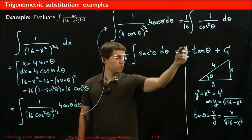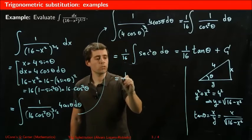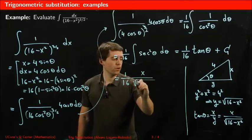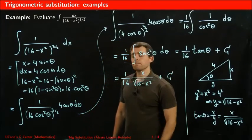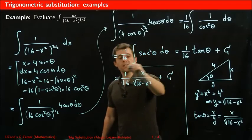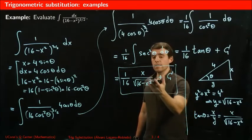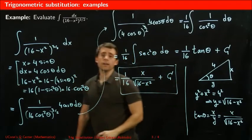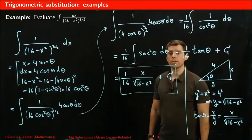So now we can substitute back into tangent theta. This is, in fact, 1 over 16, x over the square root of 16 minus x squared plus a constant. And that's it. That's our final answer. And you can yourself verify that if you take the derivative of this function, you in fact get that function inside the integral. And therefore, that's the solution.